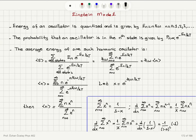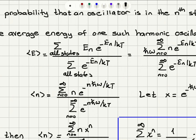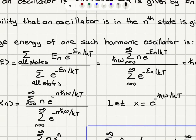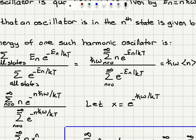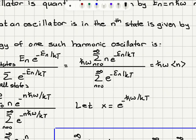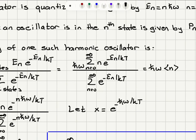Since canonical distribution applies, the average energy of a harmonic oscillator is, by statistical definition, the sum over all states of the energy in the nth state multiplied by the Boltzmann factor e^(−Eₙ/kT), divided by the partition function, which is the sum over all states of e^(−Eₙ/kT). Substituting Eₙ = nℏω, ℏω comes out of the sum.